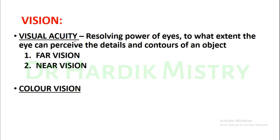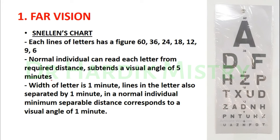Today we begin with the examination of visual acuity. Visual acuity is the resolving power of the eyes — the extent to which the eye can perceive the details and contours of an object. We are going to check far vision, near vision, and color vision. First, we begin with far vision.